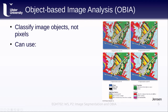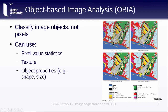When doing this kind of classification, we can use things like the pixel values or the statistics of pixel values that make up each image object. But we can also use different things like texture — the variation in brightness within a given image object — as well as object properties such as shape or size. We can also use relationships to other classes in order to help identify and classify the objects in the image.